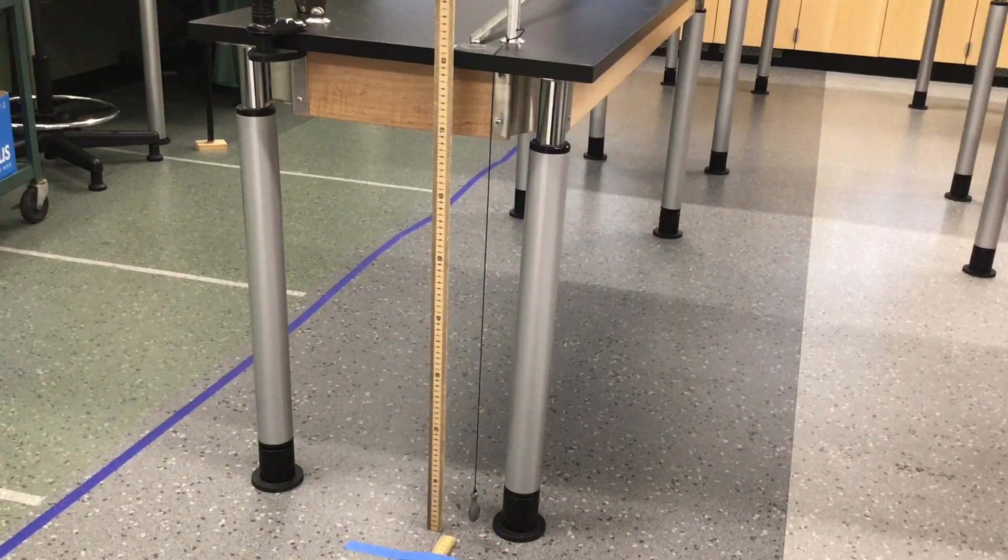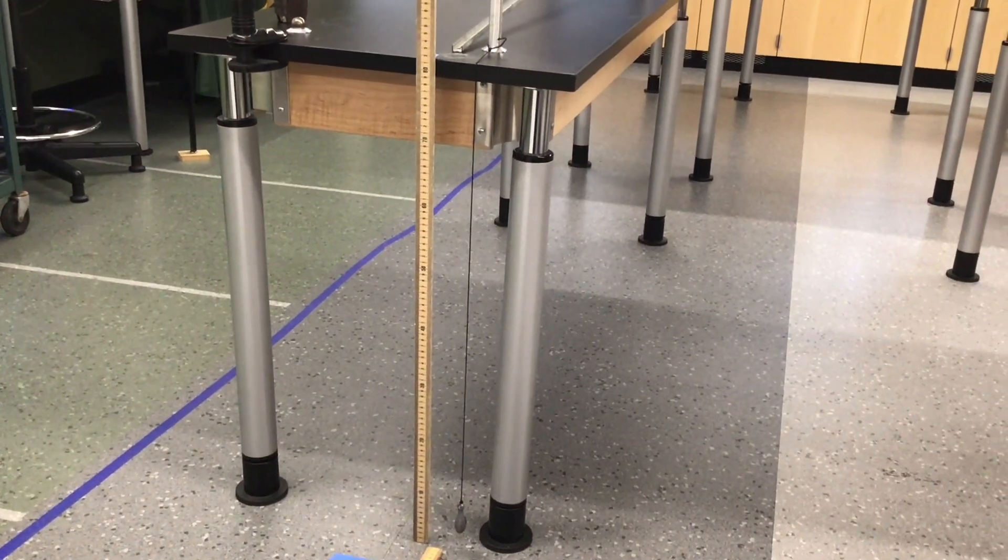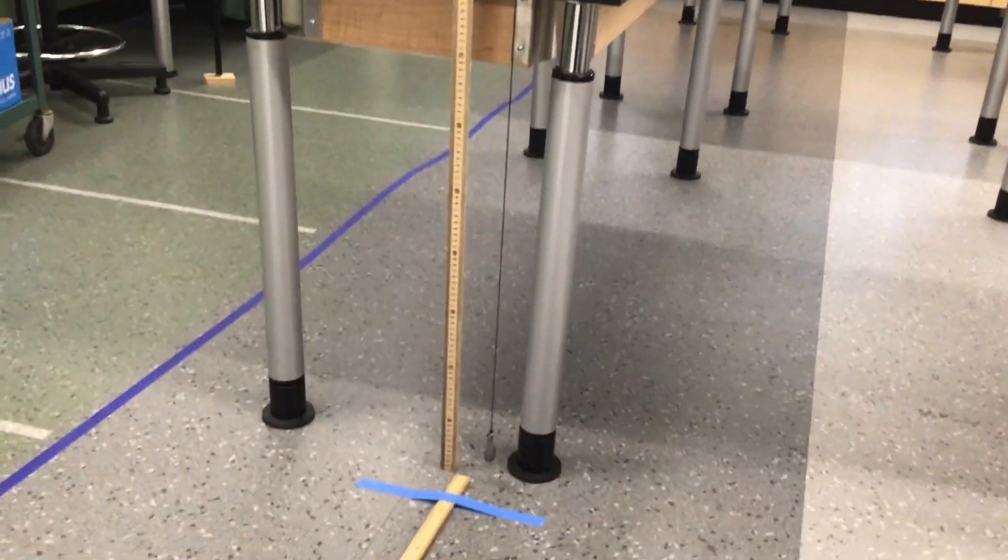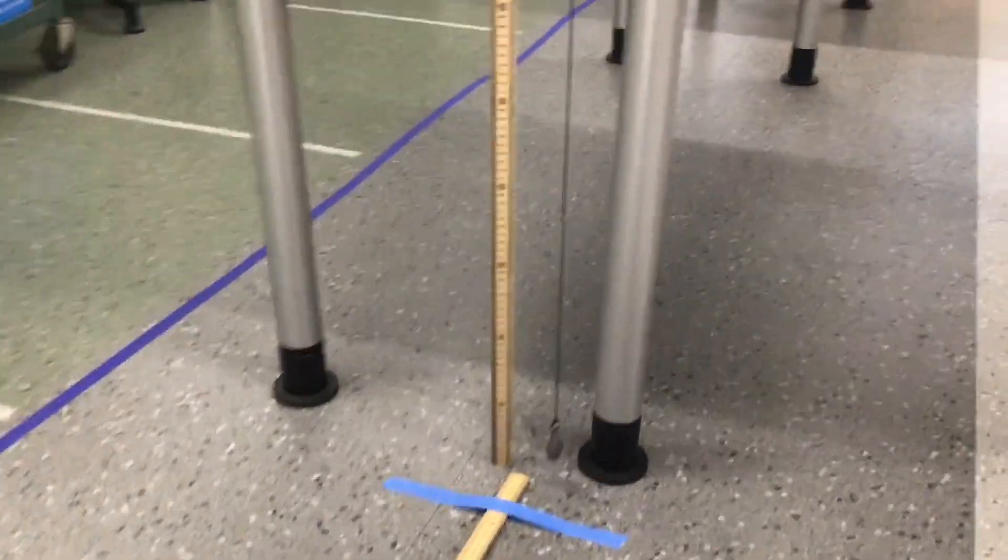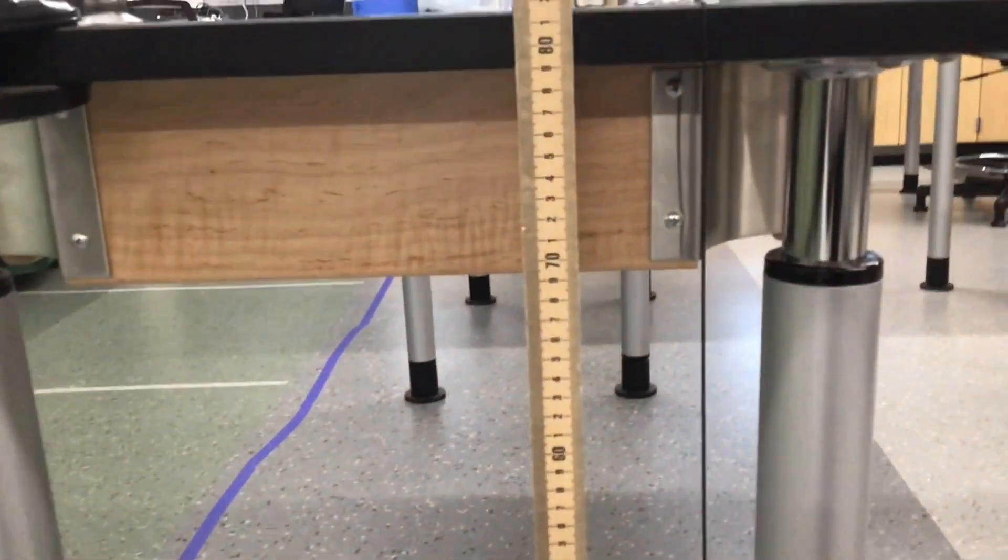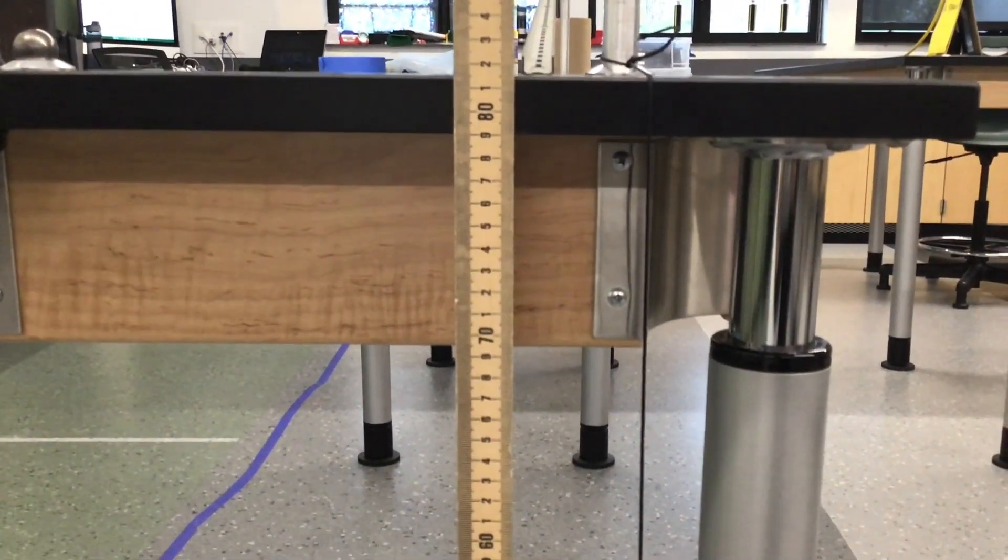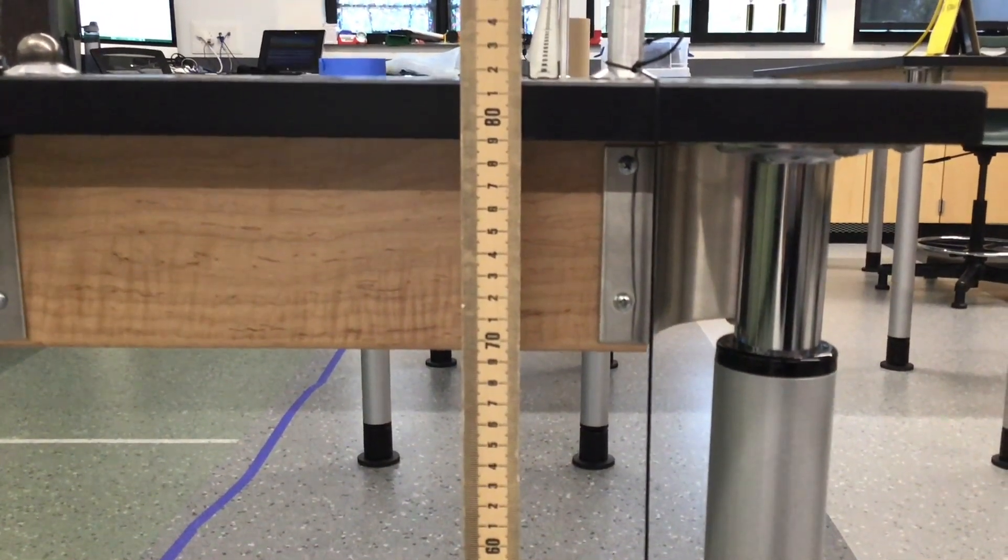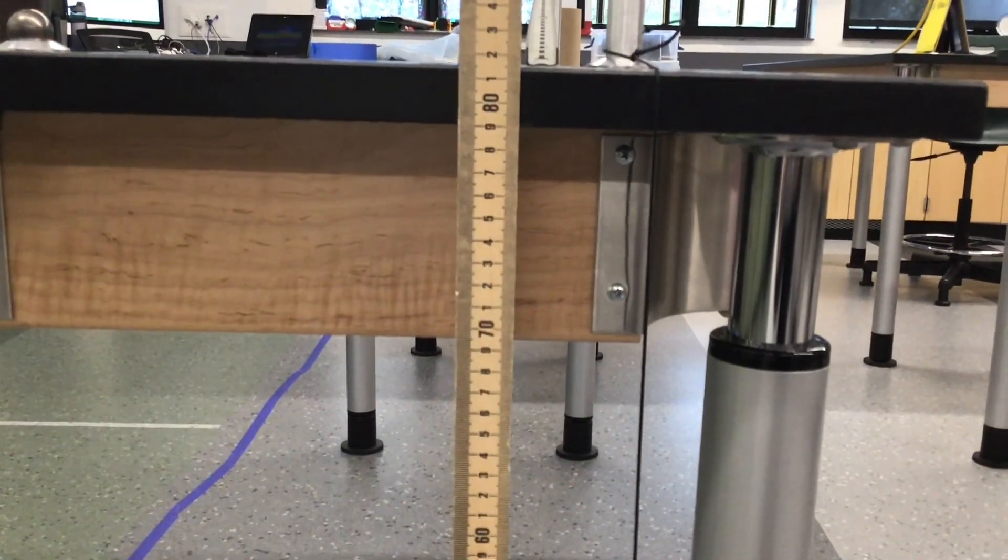Okay, so we've got a front end view of the plumb bob hanging off the edge of the table. There's the end of the ramp. And then I've got a meter stick positioned here starting down at the ground. And I'll get eye level with the table so that you can record the necessary measurements. So go ahead and do that now.